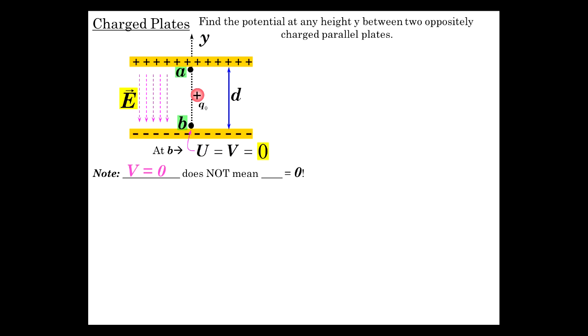Now the fact that V is equal to zero at that location doesn't mean there's no charge on the plates, it doesn't mean there's no Q. There can be a Q, or it can also be an E-field, but we're not talking about a potential difference yet, we're just talking about a reference position for the potential to be zero.